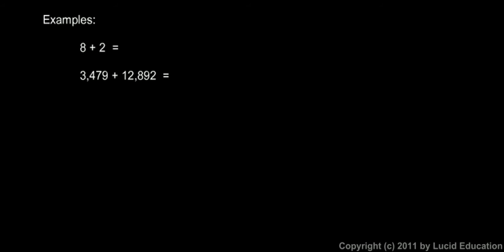A couple of examples. 8 plus 2 would be the same as 2 plus 8. I know that 8 plus 2 is 10, and I know that 2 plus 8 is 10. Now the second example, 3,479 plus 12,892, I don't know what those numbers add up to. I didn't memorize my addition table out to the 12,000s. But I do know that 3,479 plus 12,892 will be the same thing as 12,892 plus 3,479. The point is that I can reverse the order, and they will still be the same. They'll still be equal to each other. Those two numbers added that way is equal to the same two numbers added the other way.